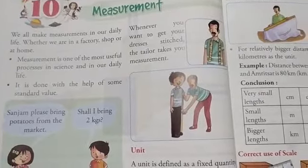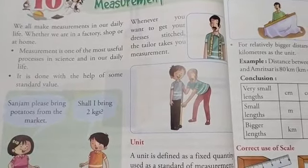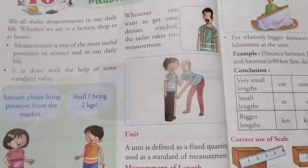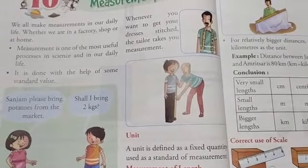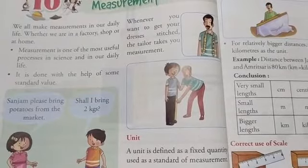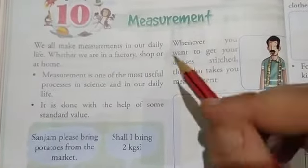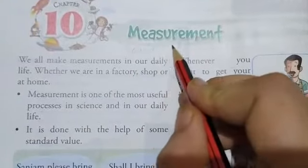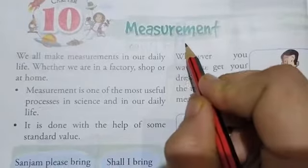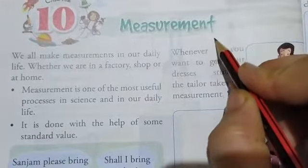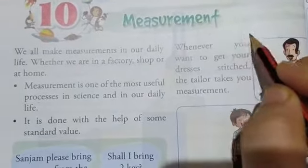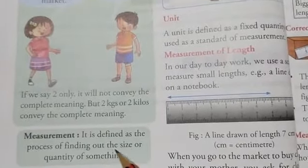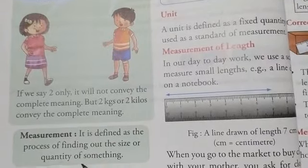So from this it is clear that measurement is very important in our everyday life. And if we do not measure anything, then it can lead to certain problems. So how can we define measurement or what is measurement? Measurement can be defined as the act of measuring something or any quantity. Or we can say that the measurement is the process of finding out the size or quantity of something.